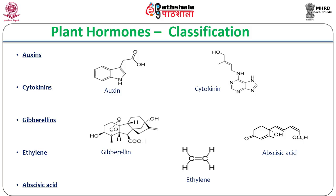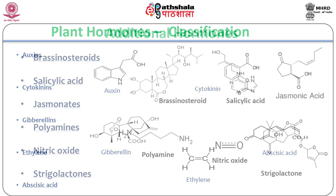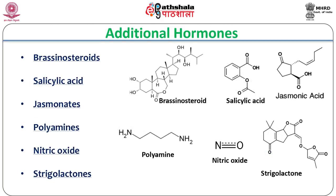Recently, other endogenous compounds like jasmonic acid, salicylic acid, brassinolides, and strigolactones have been shown to elicit hormone-like reactions.